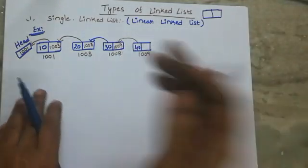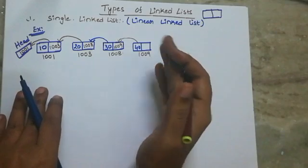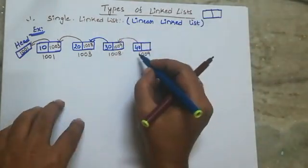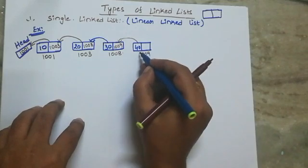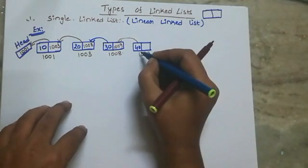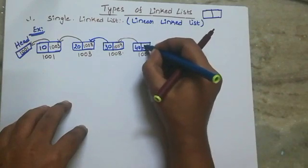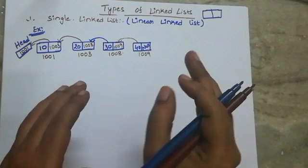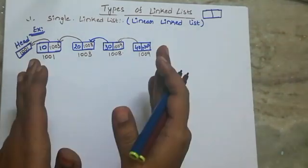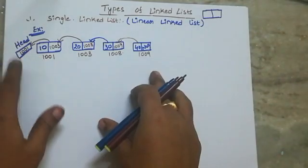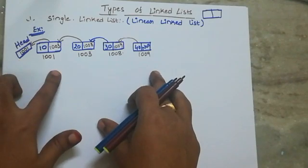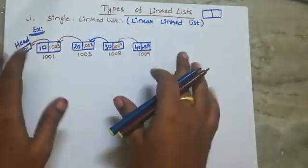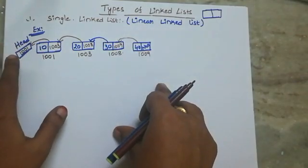Address 1009. Each and every part, next node we will store. I will stop here. After this, I will store the last node. This is the last node, and we will store null pointer here — that is the last node. Which node holds the head pointer address, we will call that the first node.